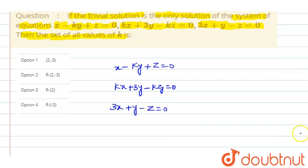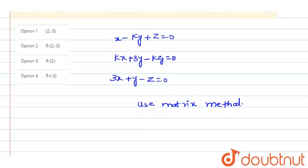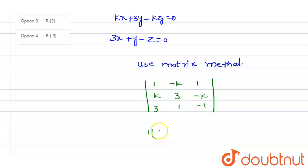Use matrix method. The next step is the determinant: 1, minus k, 1; k, 3, minus k; 3, 1, minus 1. So 1 into minus 3 plus k, minus k into minus k plus 3k, plus 1 into k minus 9.